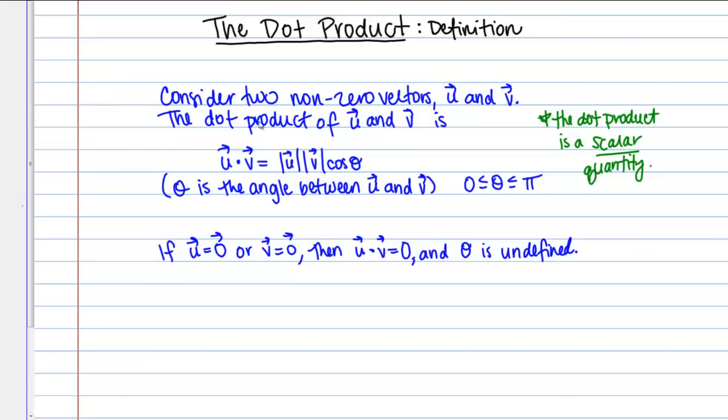Once again, this definition is for two non-zero vectors. If vector u or vector v are zero, then we have this case down here, the last line. If vector u is a zero vector or vector v is a zero vector, then u dot v equals zero. That's just a scalar zero. The dot product is zero and theta, the angle between the vectors, is undefined.